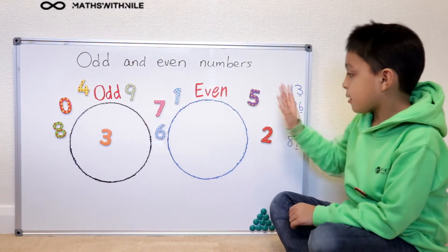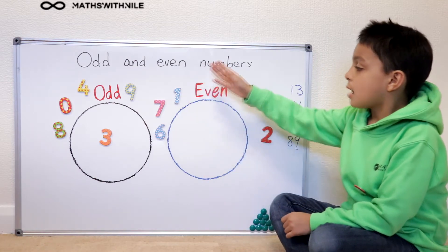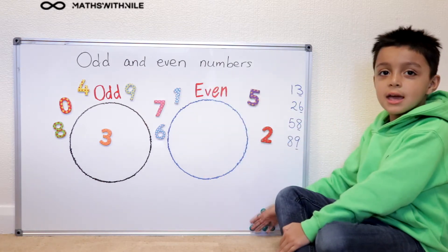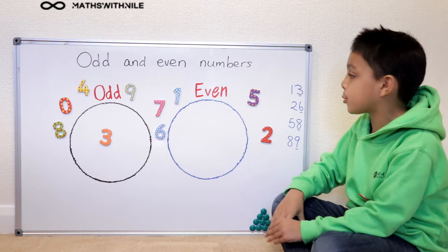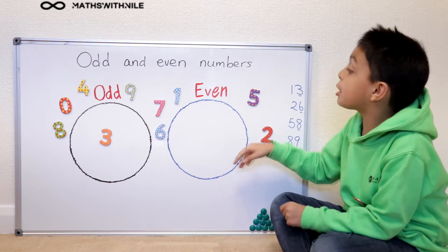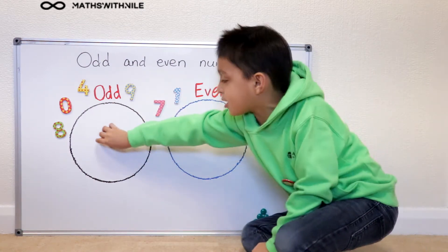So we got our numbers here and we got our counters here to help us while we're doing our numbers. We got our two circles to put our numbers in.